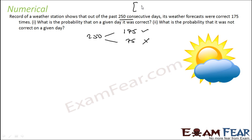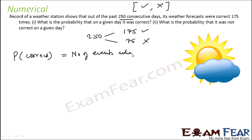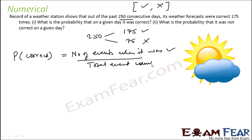So in this case, if you see, my sample space is wrong and right. What is the probability that on a given day it was correct? So probability of correct is the number of events when it was correct by total event count, and that is 175 out of 250, which gives 0.7.